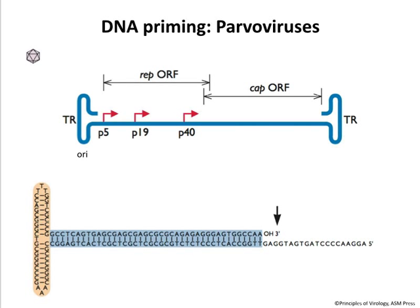That was SV40 with a double-stranded circular DNA. Now let's look at parvovirus — a different DNA topology with a different solution. The parvovirus genome is single-stranded DNA, rather small, encoding only a couple of capsid proteins and a couple of replication proteins. The ends form T structures — terminal inverted repeats that can base pair to form a hairpin. The very three-prime end of the genome has sequences complementary to adjacent regions, which base pair to make the T structure. This T structure is going to serve as the primer for DNA synthesis — a built-in primer.